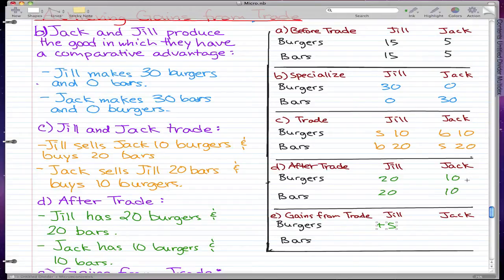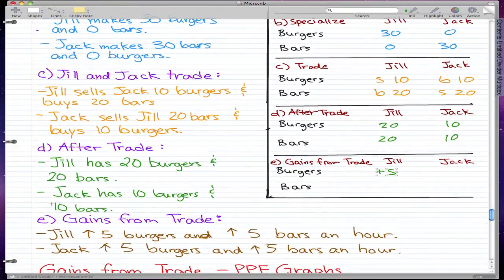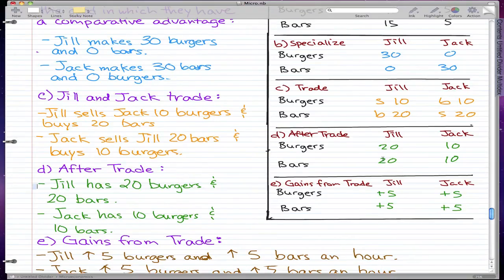So the gains from trade is that Jill actually increased her burgers and bars by 5 an hour, and Jack actually increased his burgers and bars by 5 an hour. So we're going to have all these plus fives here.